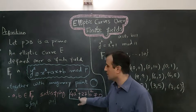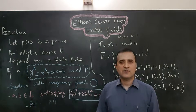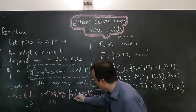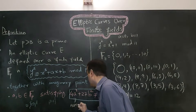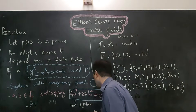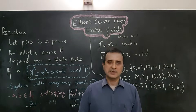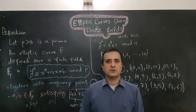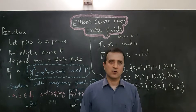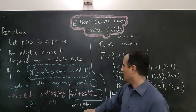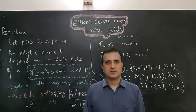This condition enforces that our elliptic curve is non-singular. On a non-singular elliptic curve, a tangent is defined at every point, giving a smooth curve with no vertices. A curve is singular at a point where both the partial derivative with respect to x and the partial derivative with respect to y equal zero. For now, consider that this condition makes the elliptic curve usable for cryptography.